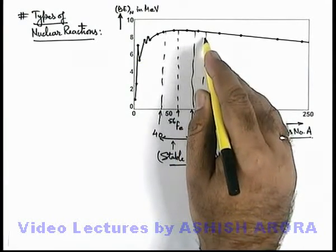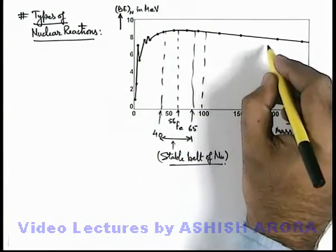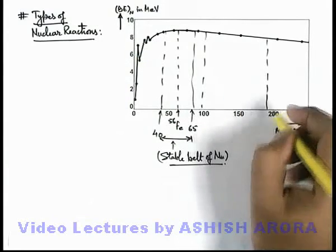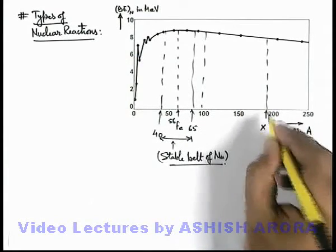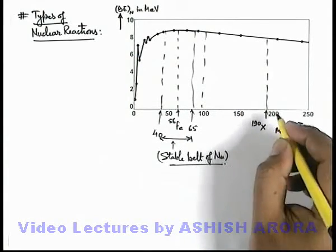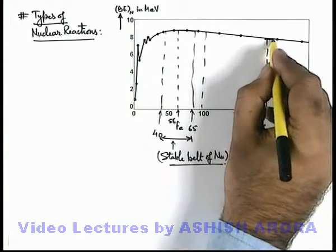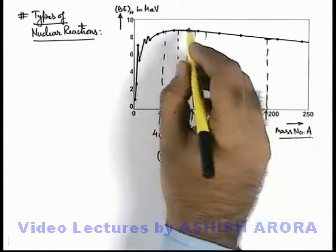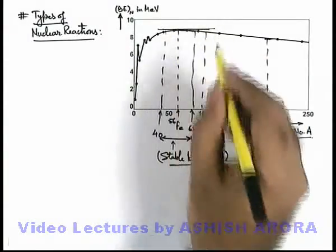If we talk about elements which are having heavier weights, like say if we consider an element X which is having mass number 190, this will be having certainly the binding energy per nucleon less compared to this maximum range of binding energy.